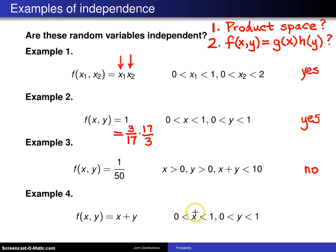Example 4: Here again is the unit square. We know the square is rectangular, so are they defined on a product space? Yes. Now, the joint distribution is X plus Y. Can we write this as a function of X multiplied by a function of Y? I don't think we can, so the answer is no, which means these two random variables are dependent.